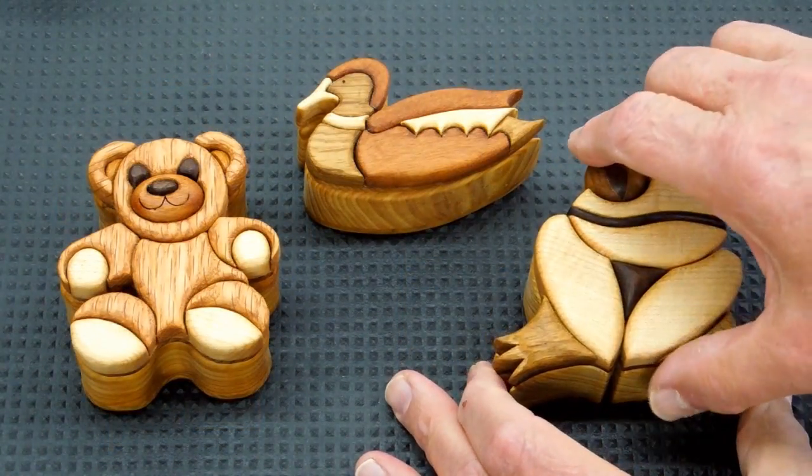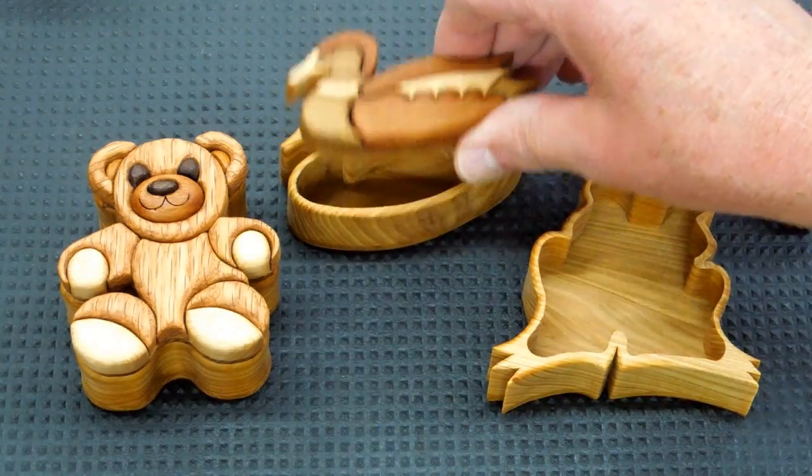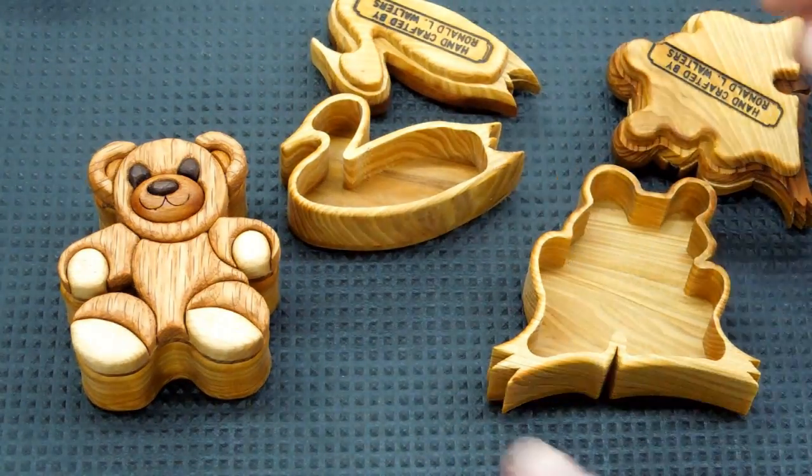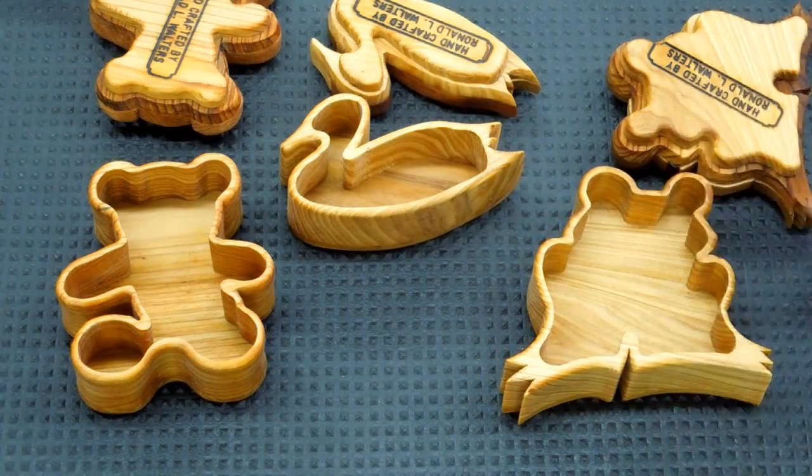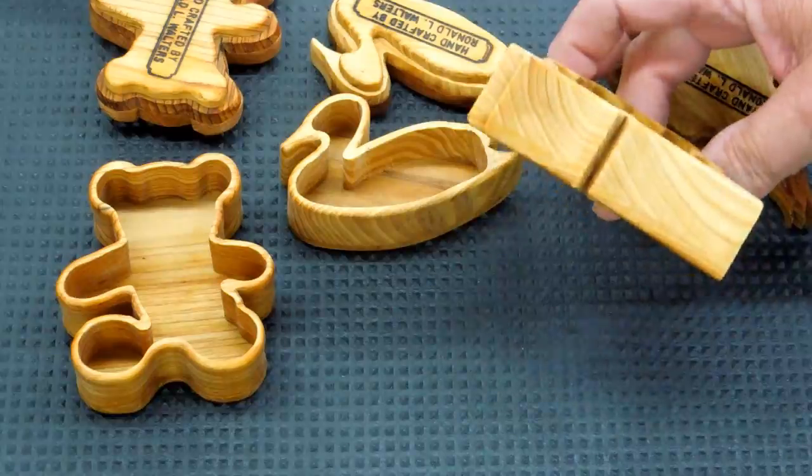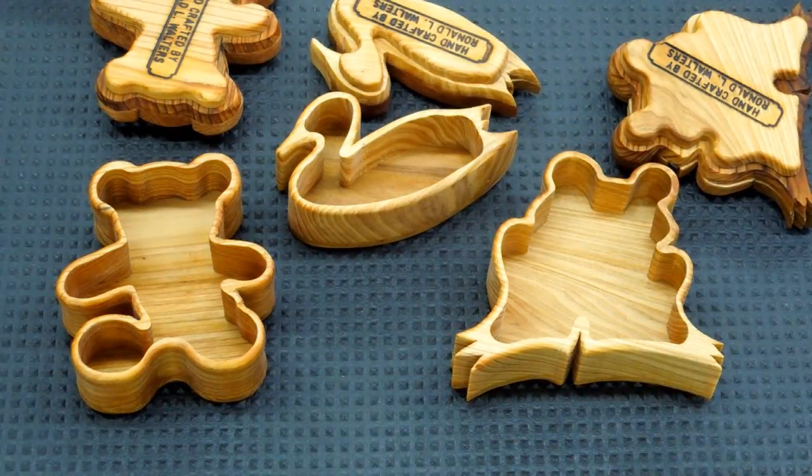I was able to obtain some scrap pieces of old cypress that was cut over 150 years ago and they built a sugar cane mill with it. This was then reclaimed from the sugar mill and some of these pieces were over 2 inches thick and they were floor joist.